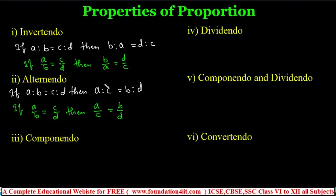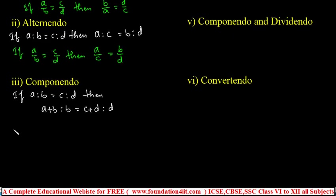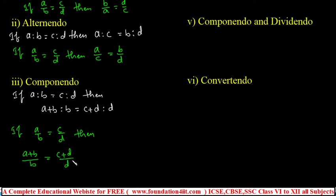For componendo: if a is to b equals c is to d, then according to componendo we can write a plus b is to b equals c plus d is to d. In fraction form, if a by b equals c by d, then a plus b by b equals c plus d by d. The ratio does not change — we add the numerator and denominator.